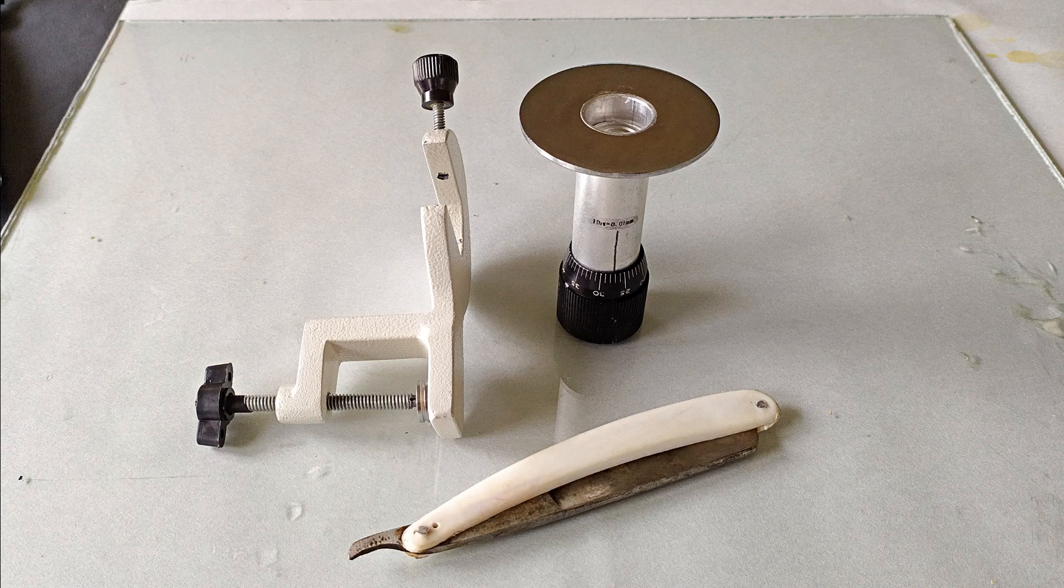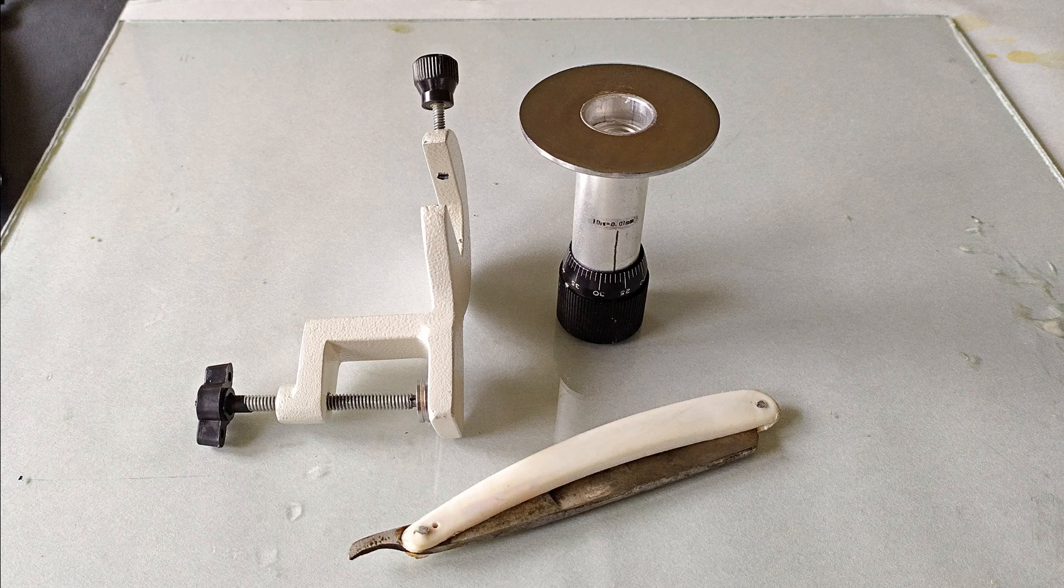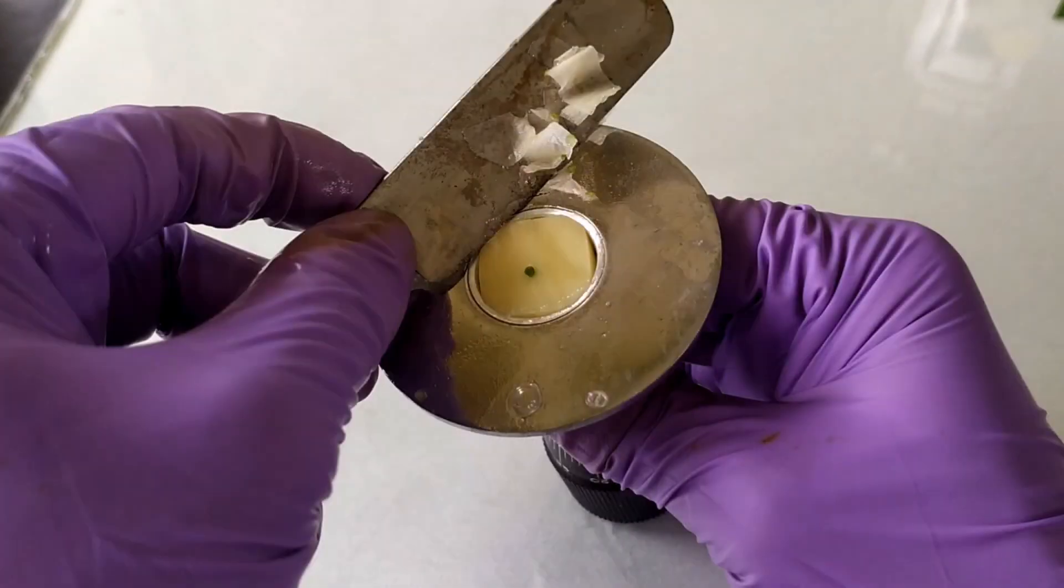Now once you have prepared and placed the sample in the sample holder using any one or a combination of the previously discussed techniques, proceed with the section cutting. To do so, first turn the graduated knob anywhere between 10 to 20 divisions and then start sectioning the sample. To section the sample, place the razor blade on one corner against the sample at an inclined position of about 10 degrees to the sectioning platform.